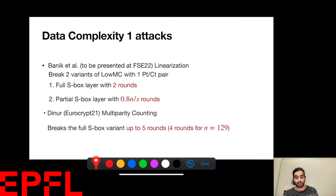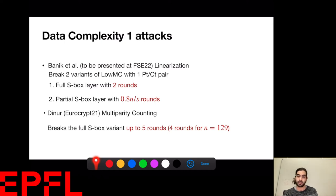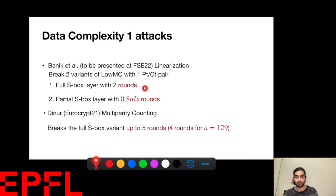This is where other attacks come into play. Our previous work uses an algebraic property of the S-box to linearize it with not many guesses. For the full S-box layer variant we break up to two rounds, and for the partial S-box layer variant we break up to 0.8·N/S rounds — these numbers come from the LowMC cryptanalysis challenge. There is also the NURS attack from EuroCrypt 2021 based on multiparity counting, which only works for the full S-box variants and breaks up to five rounds.